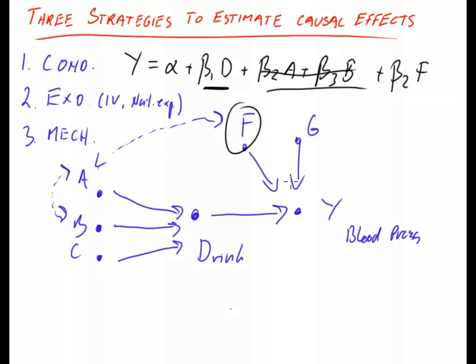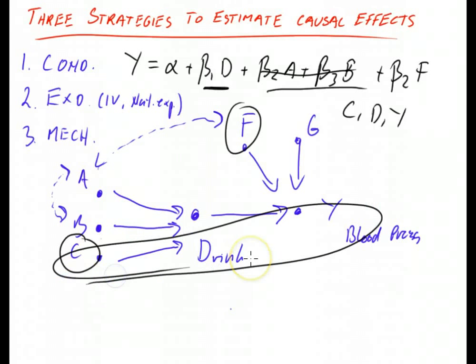Now you're trying to find a variable that affects the treatment variable but does not affect the outcome variable that you're interested in. And in this diagram that is C here. C affects drinking but does not affect Y directly. B affects Y because B goes through A, through F, and then Y. So if you can find a variable like this that affects the treatment variable but not the outcome variable, then you only need the information on C and D and Y, and that's all you need in order to estimate the causal effect. So that's a different strategy than conditioning.